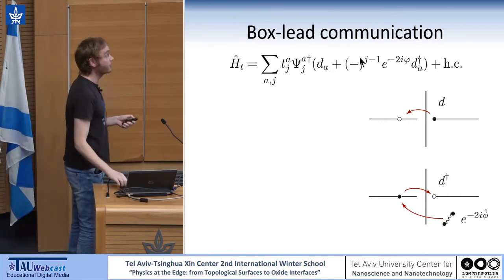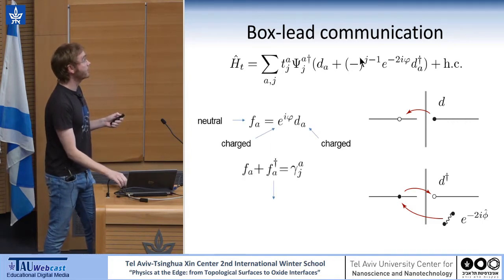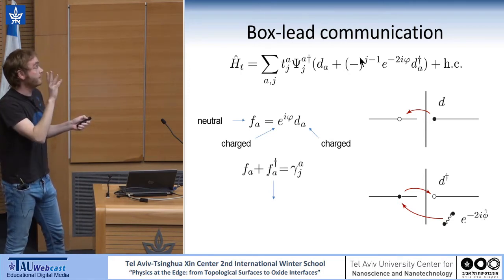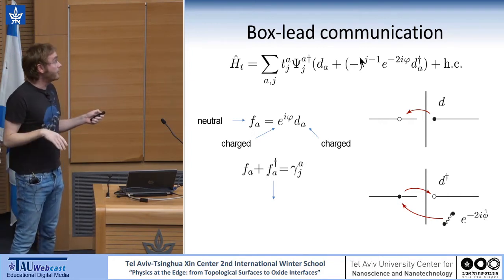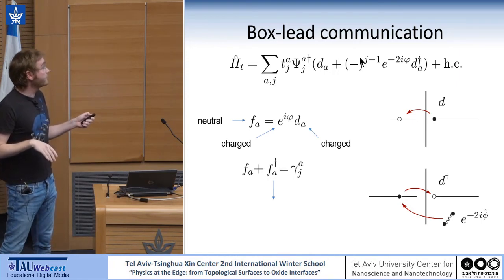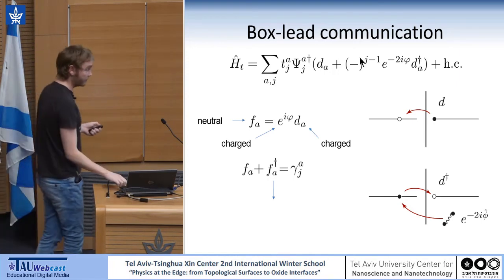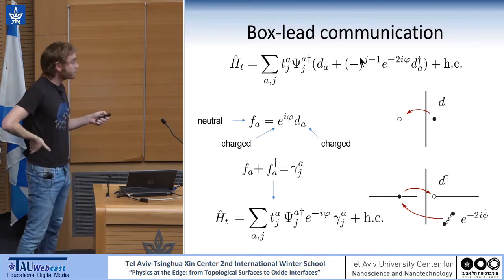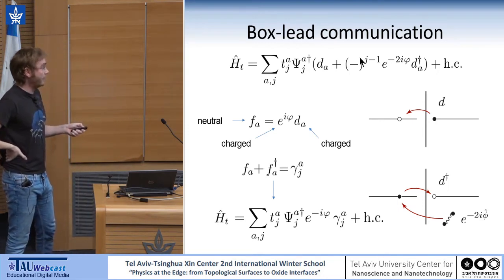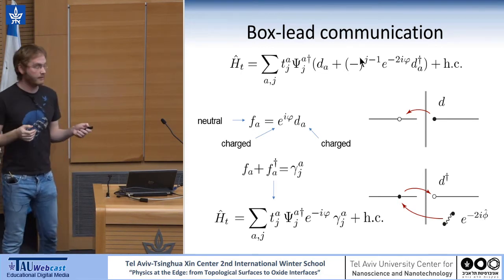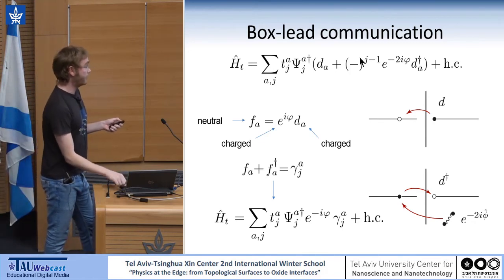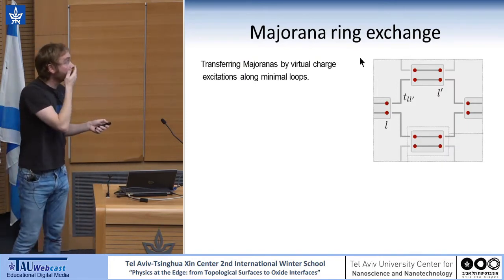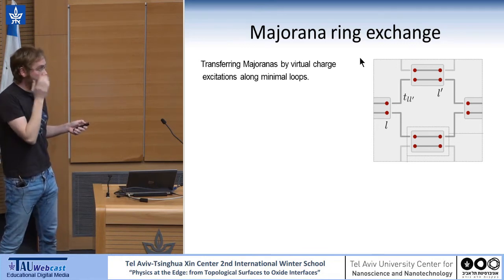We can transform this tunneling amplitude via a unitary transformation. We present a neutral fermion operator where e to the i phi destroys or creates half a Cooper pair — just one charge. We can define Majorana operators out of this neutral operator. By simple algebraic transformation, we obtain the following effective tunneling amplitude. This tunneling can completely remove the degeneracy of the system. We treat this effective Hamiltonian perturbatively through the Schrieffer-Wolff transformation, and through virtual excitations of charge we obtain an effective Hamiltonian.